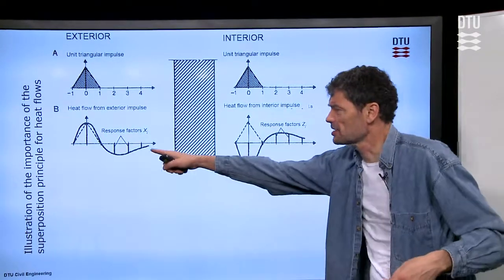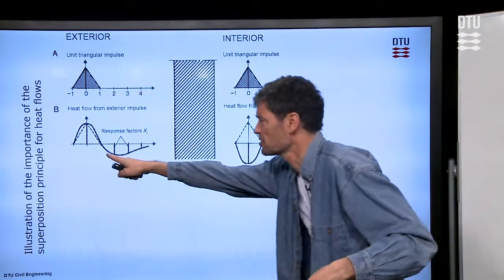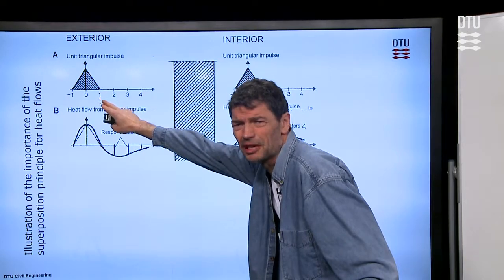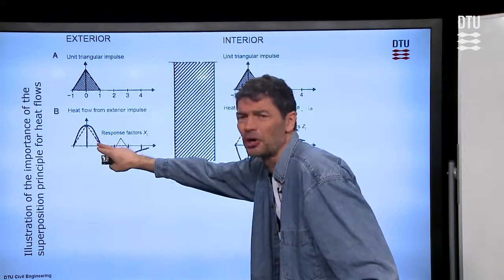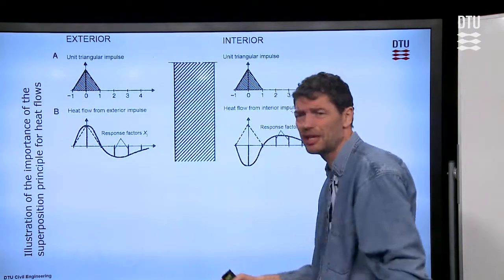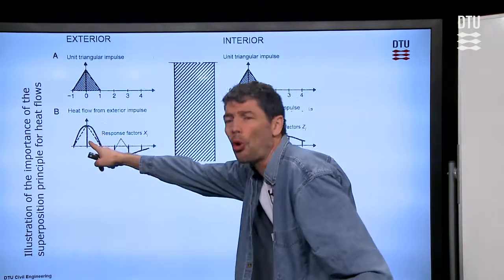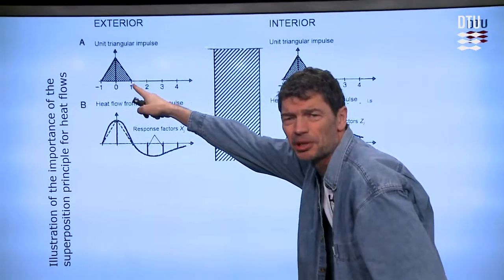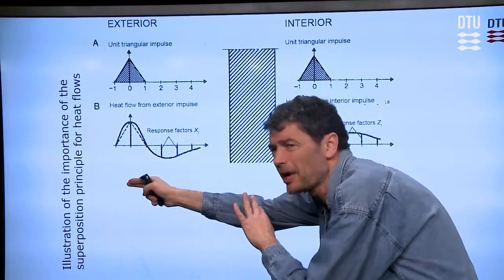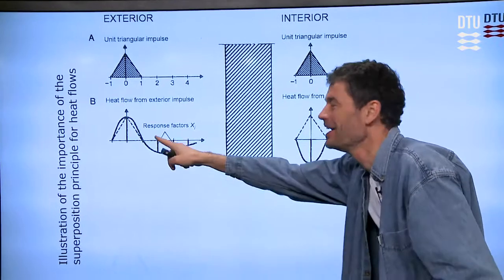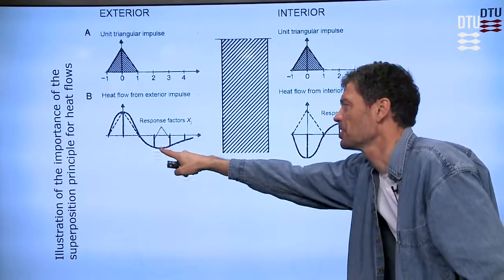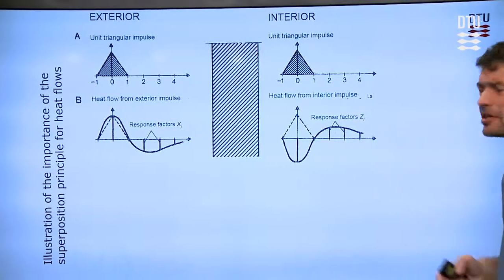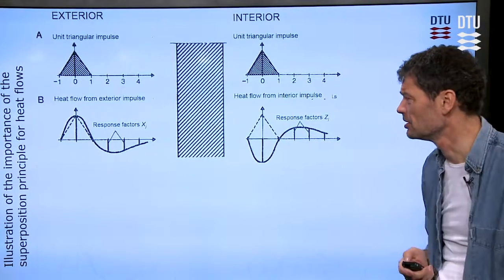Also, we see these response factors, they are themselves time dependent functions. So it tells us as a result of the temperature impulse on the left, first, we have heat flow going into the wall, which is in a positive X direction. So we have a positive X factor in the beginning. After a while, when the temperature impulse stops, well, then the heat is flowing back to where it came from, so to speak. And then we have a time sequence with smaller, but negative response factors. And we see the same on the right hand side with the opposite sign in front of it.